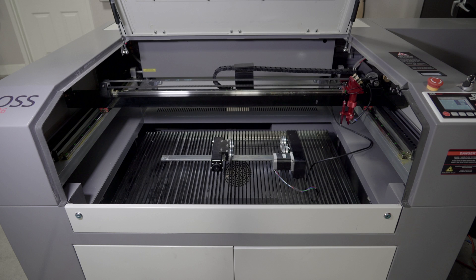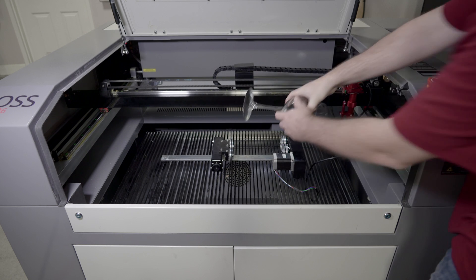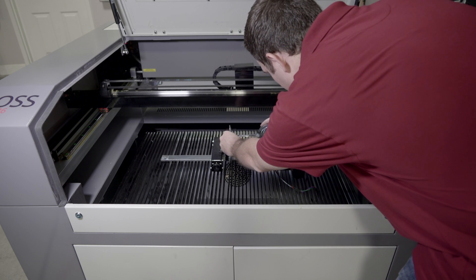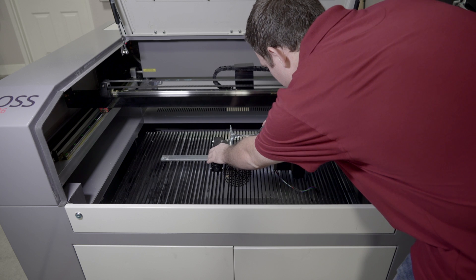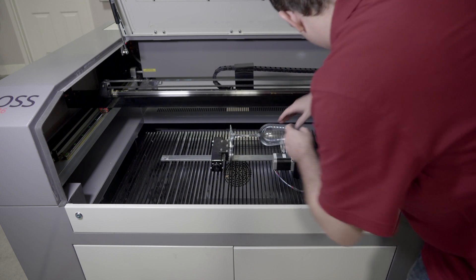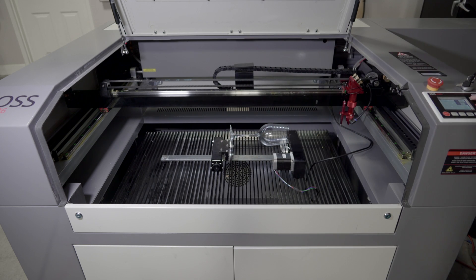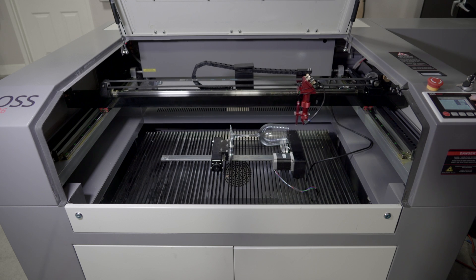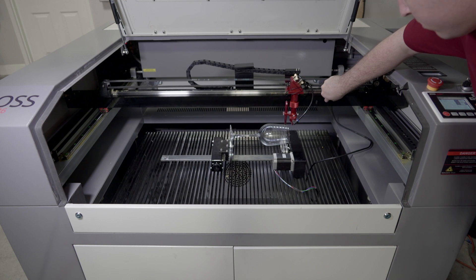The heaviest end of the object that you're engraving should be on the side of the rotary that the motor is on. Use the directional pad on the machine control panel to move the laser head left and right along the X-axis.